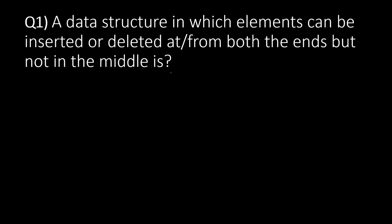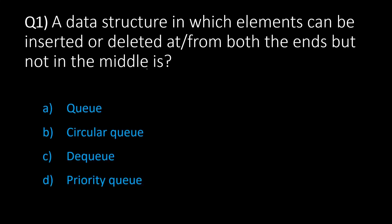The first question: a data structure in which elements can be inserted or deleted at or from both the ends but not in the middle — which one of these data structures is it? The options are option A: Queue, option B: Circular Queue, option C: DQ, and option D: Priority Queue. The answer is option C, that is DQ.